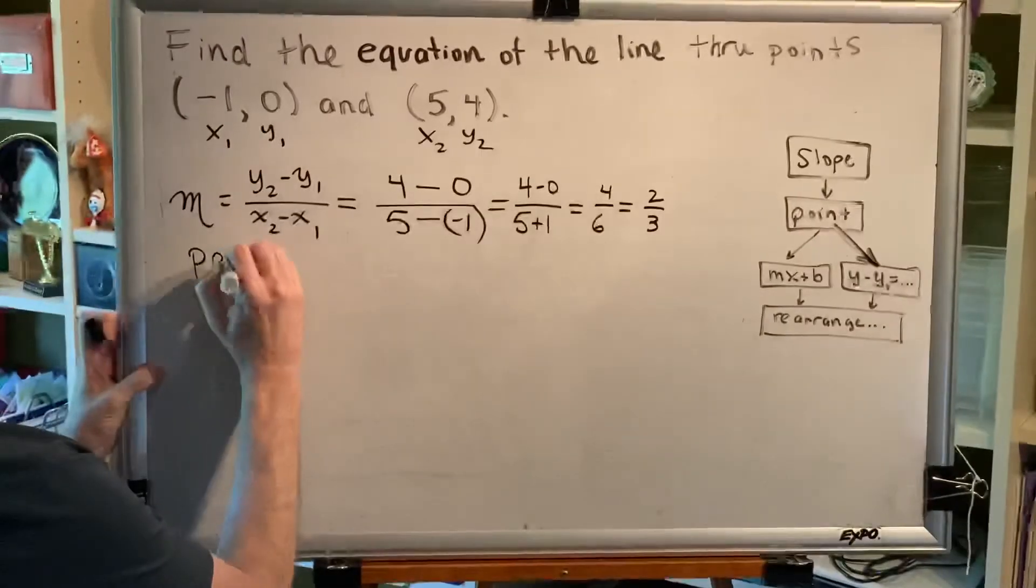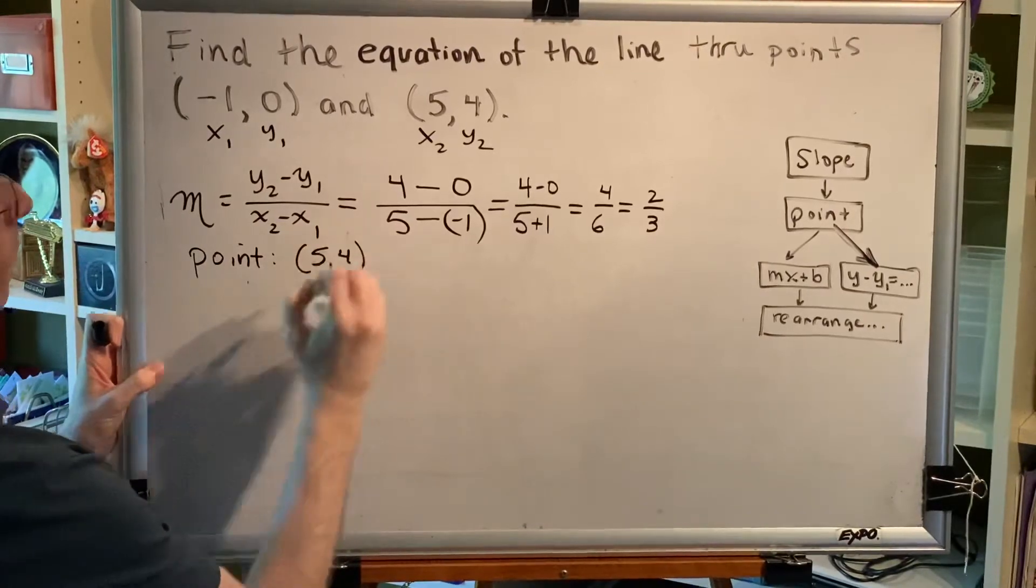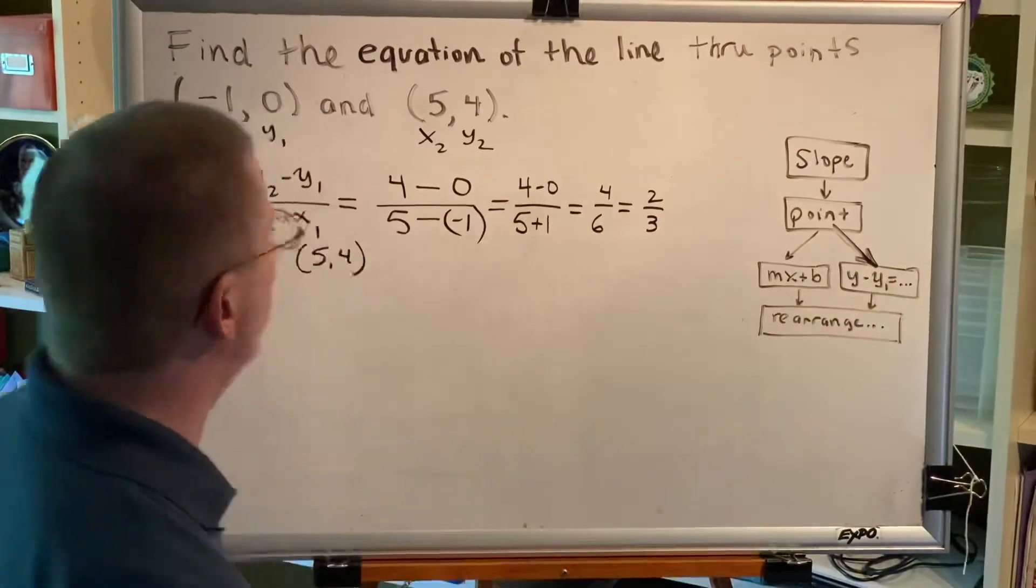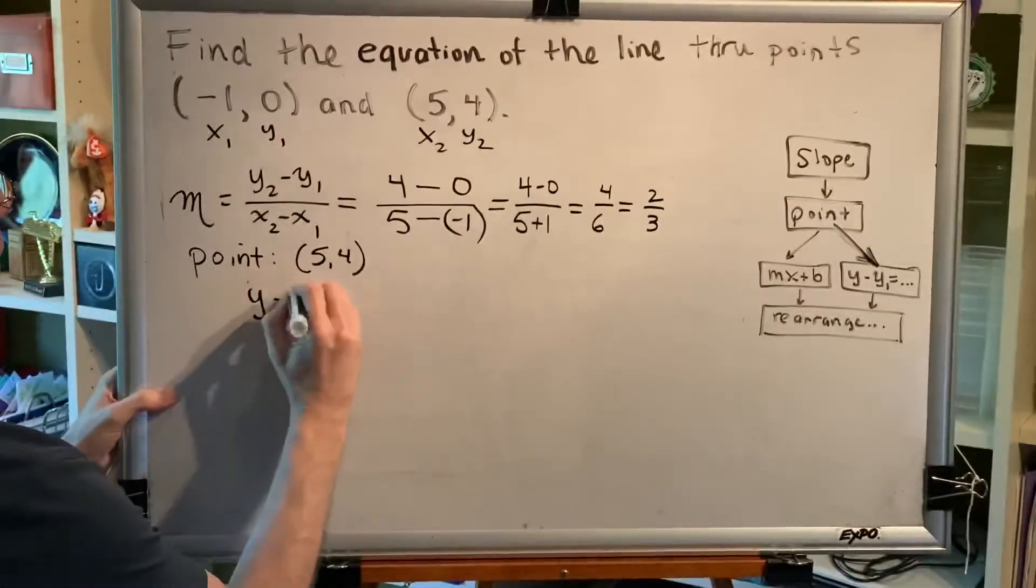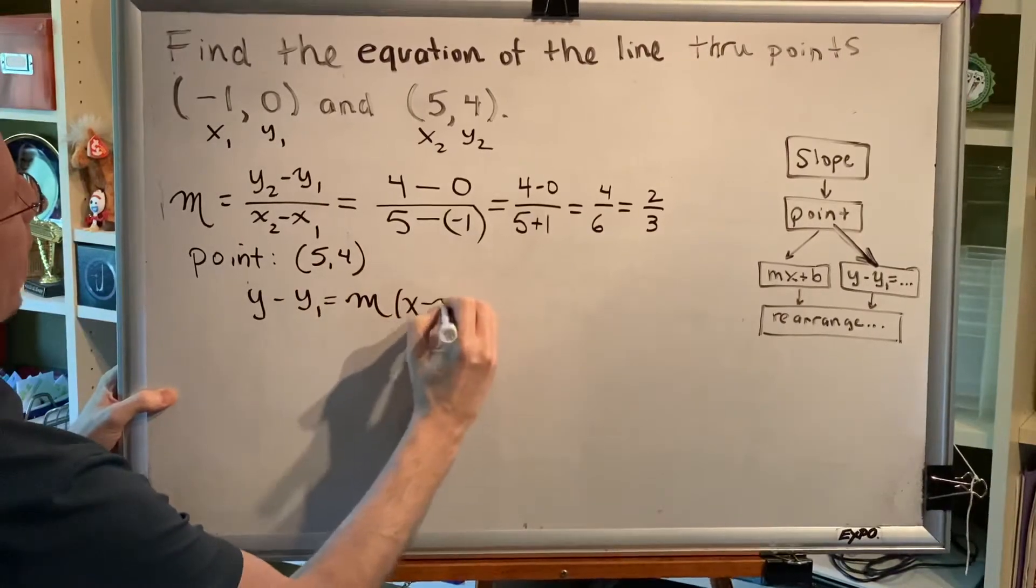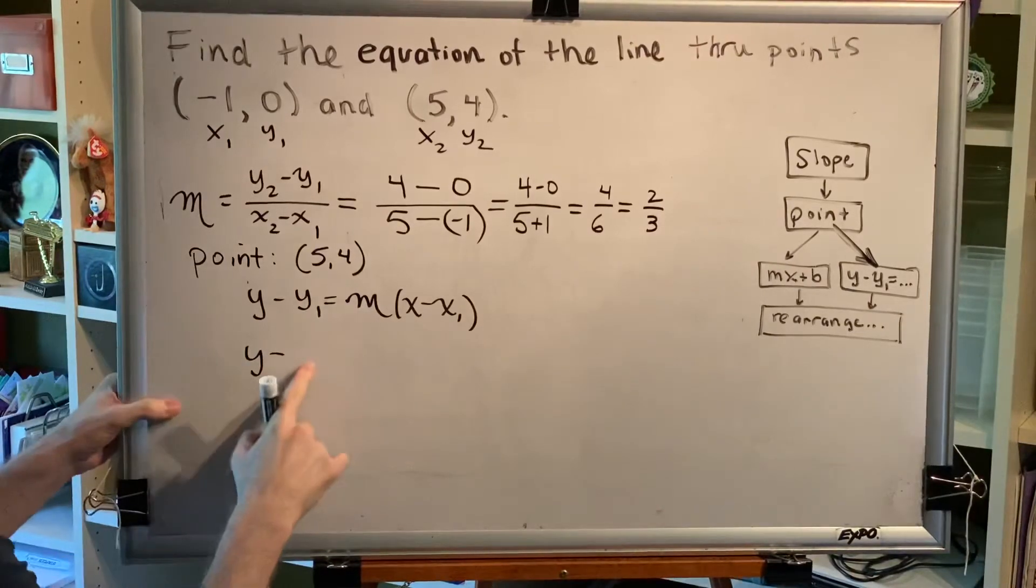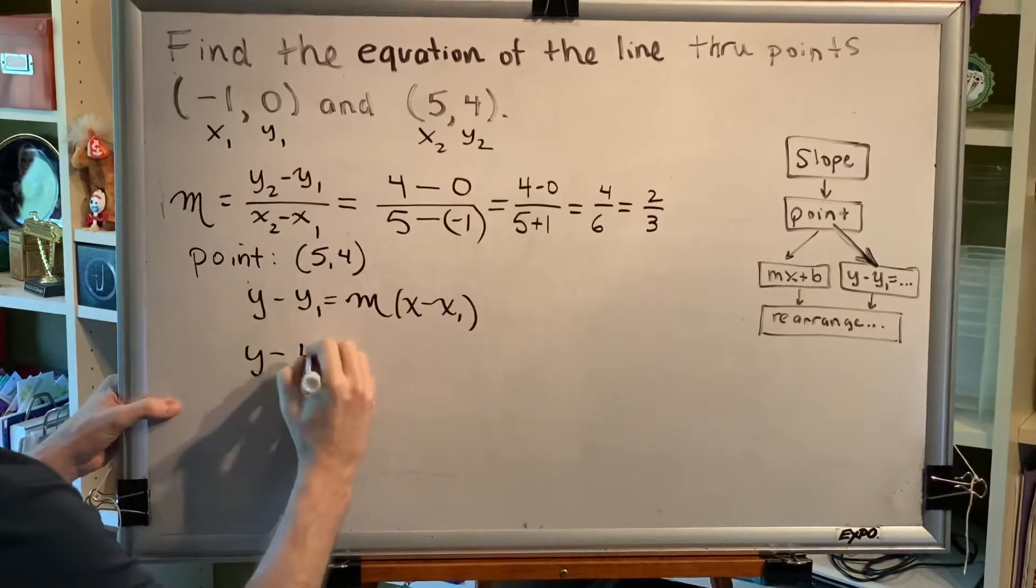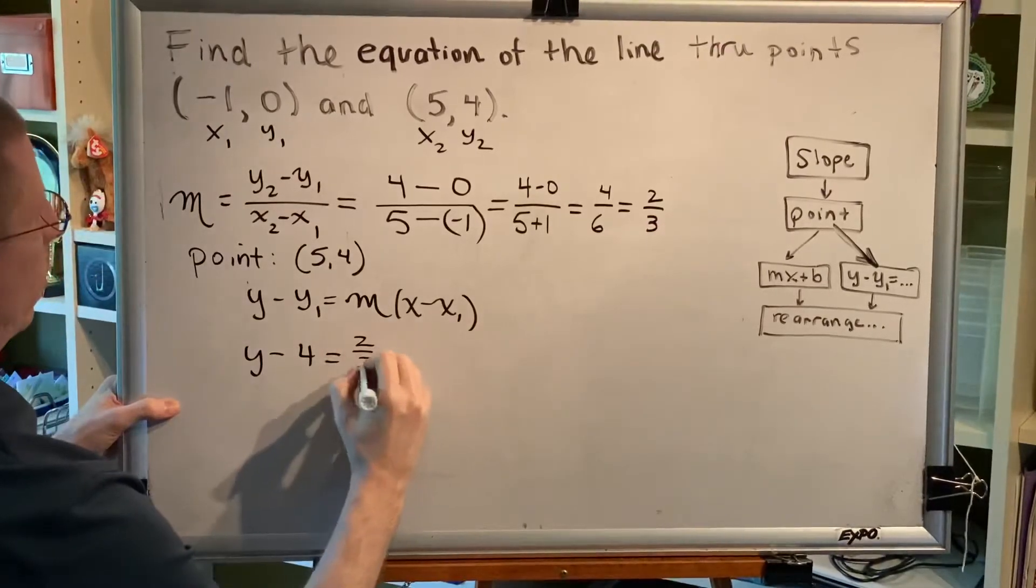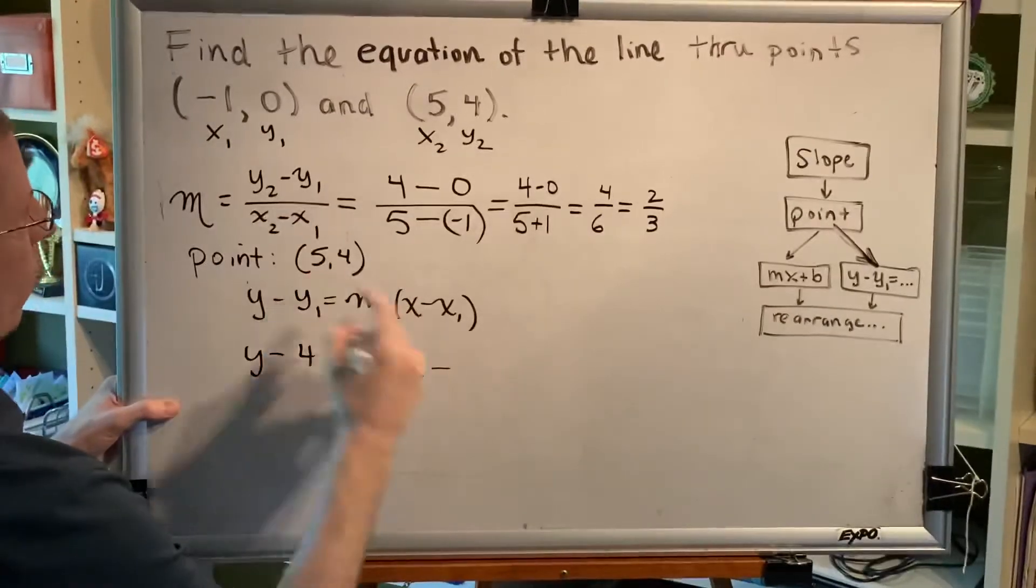So we'll use the point (5, 4). Okay, it has an x coordinate that's not 0 so we take the path to the right which is the point-slope formula. y - y₁ equals m times the difference x - x₁, and so we plug in: y minus y₁ which is 4 equals m which is 2/3 times x minus x₁, x minus 5.